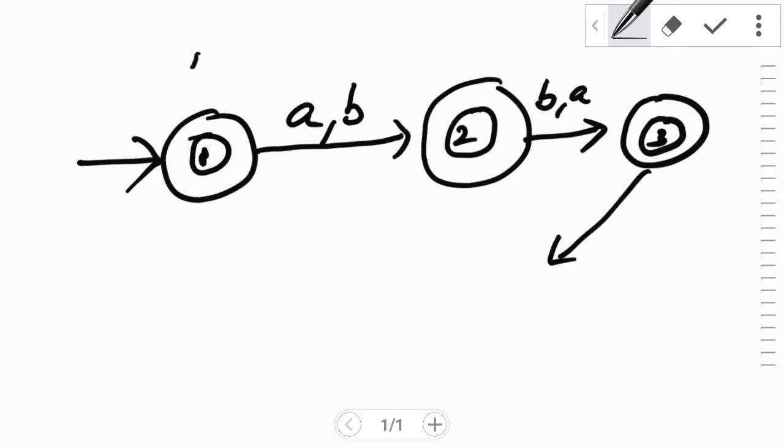In such a case, draw a trap state. That is, if either A comes or B comes, the string has to be rejected. In such a scenario we'll create a trap state and mark a self loop of both A and B over it.